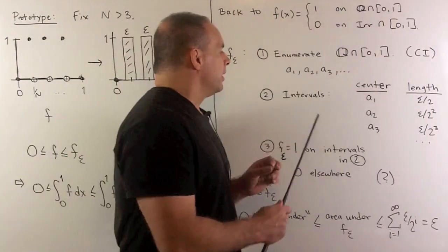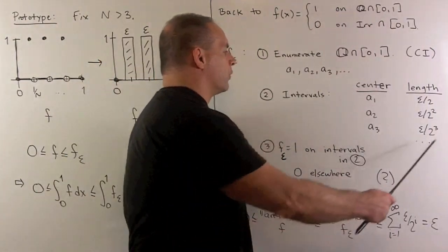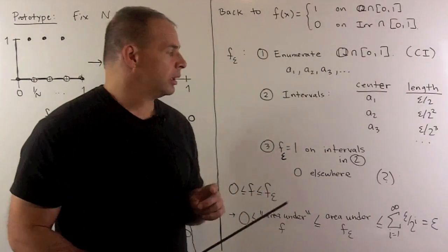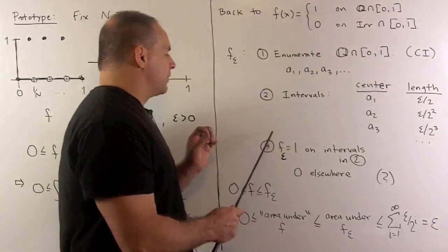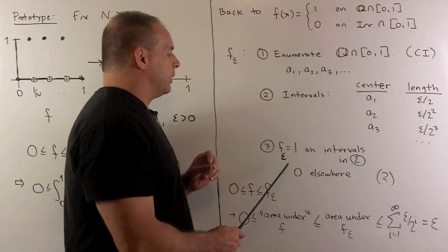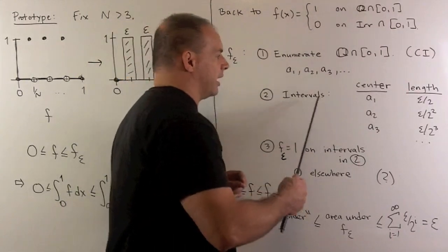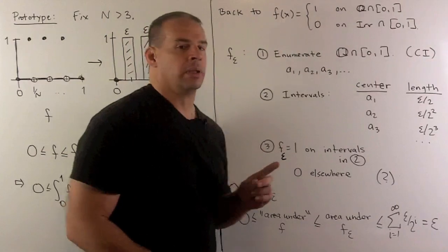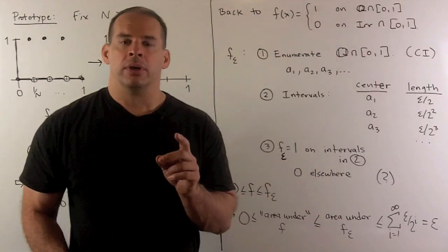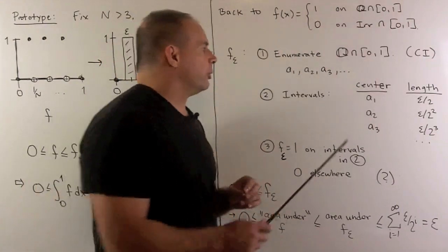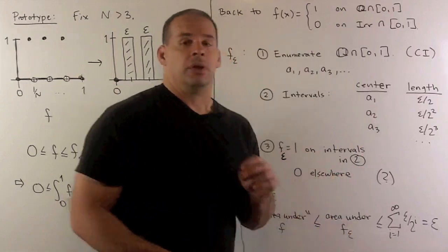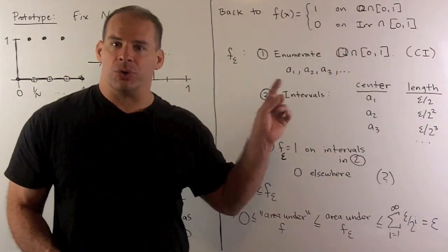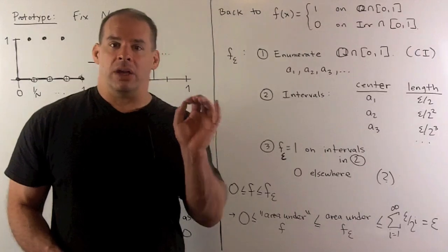Also note, the intervals here may overlap, so we're not worried about that. For f sub epsilon, we define it to be one for any points that show up in any of these intervals, and zero elsewhere. You might be wondering: we have every rational number in this interval surrounded by an open interval — shouldn't this cover the entire closed interval? The answer is going to be no.